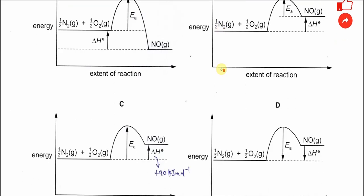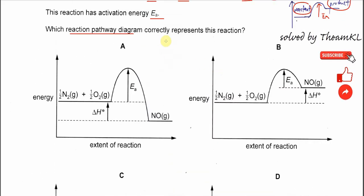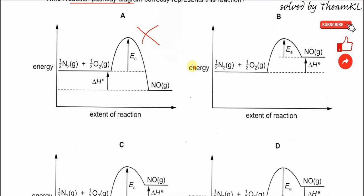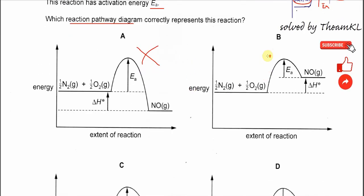So we can choose B, C, or D — not A, because A is exothermic, so A is out. Now, how about B? For B, the EA is wrong. The EA should go from the reactants to the peak maximum, so B is wrong.